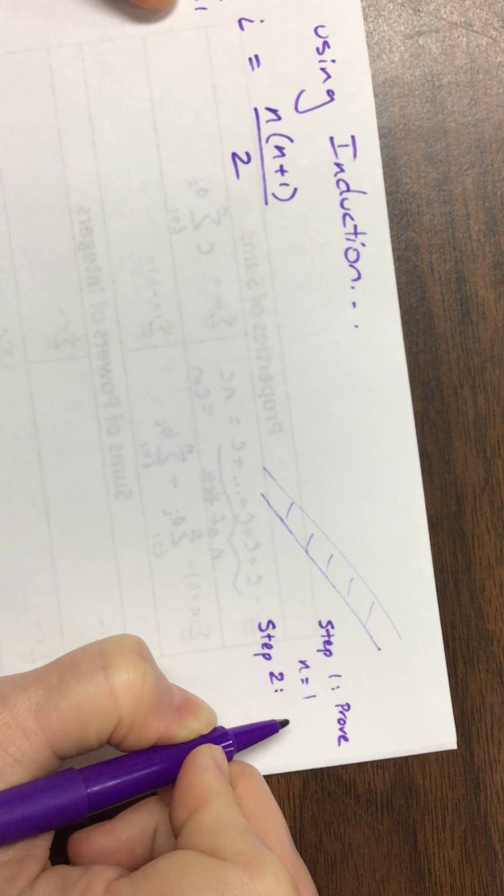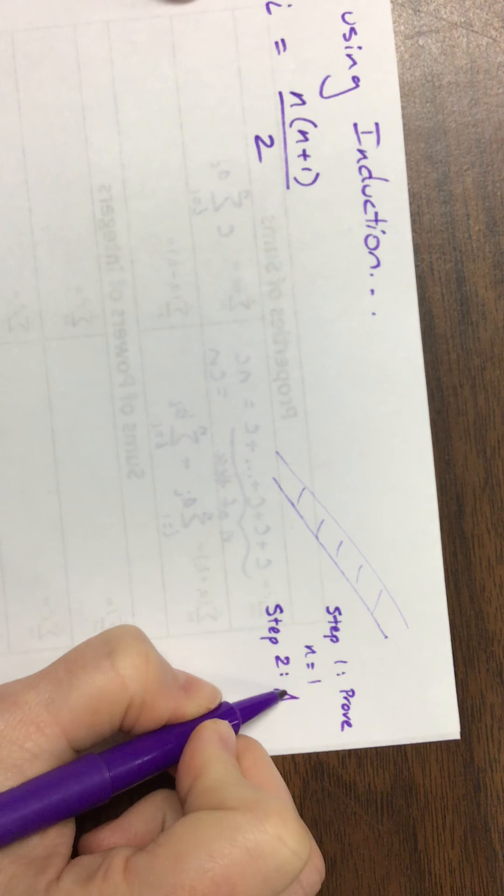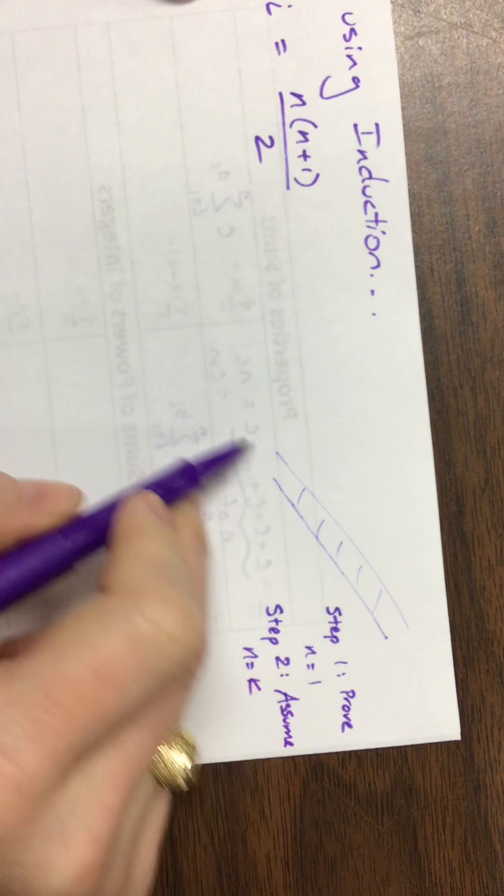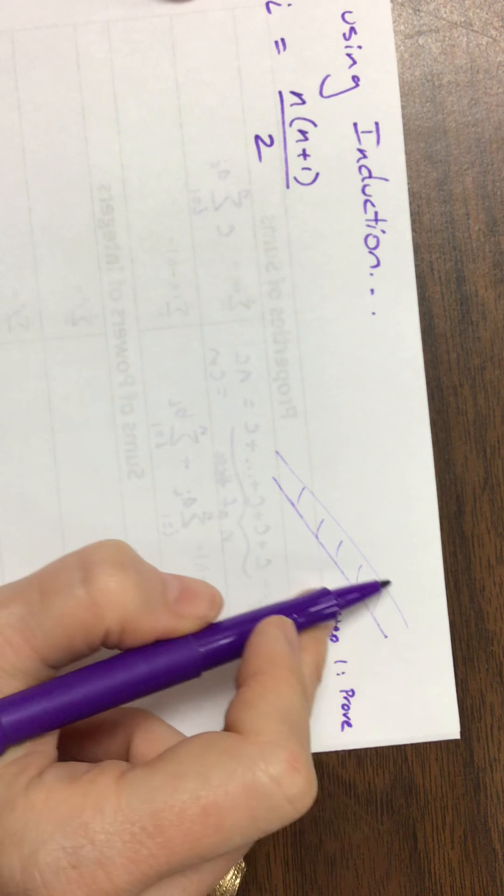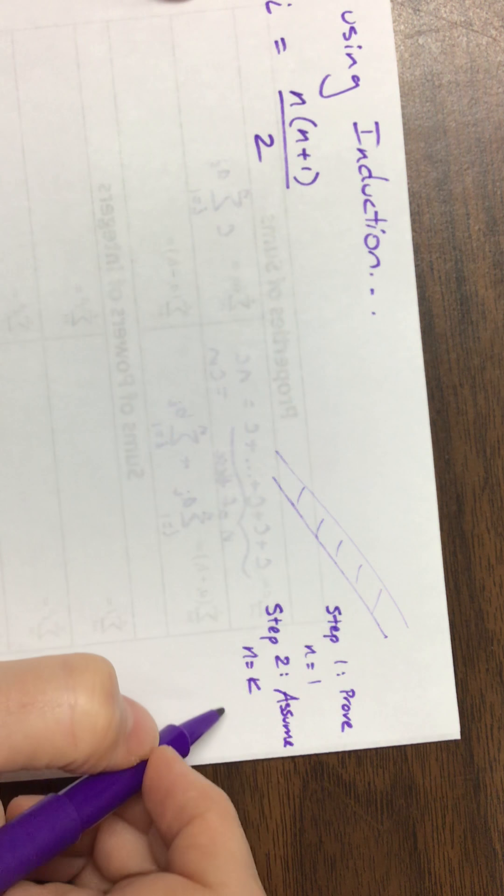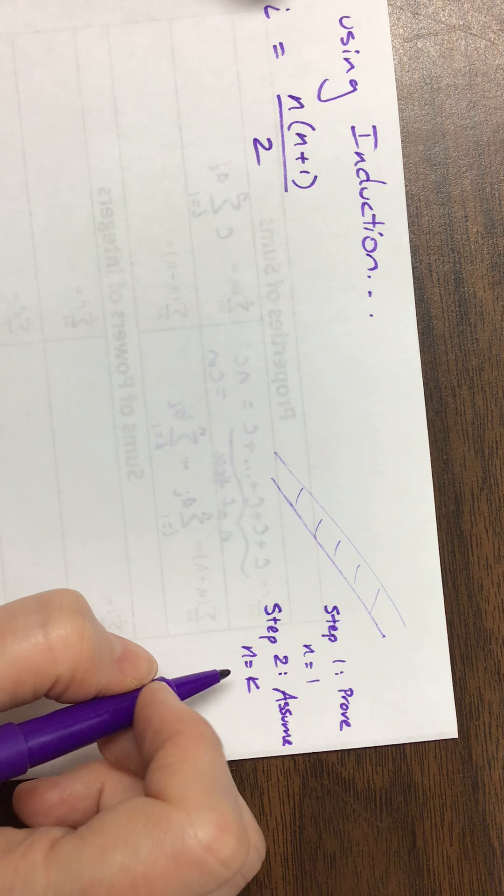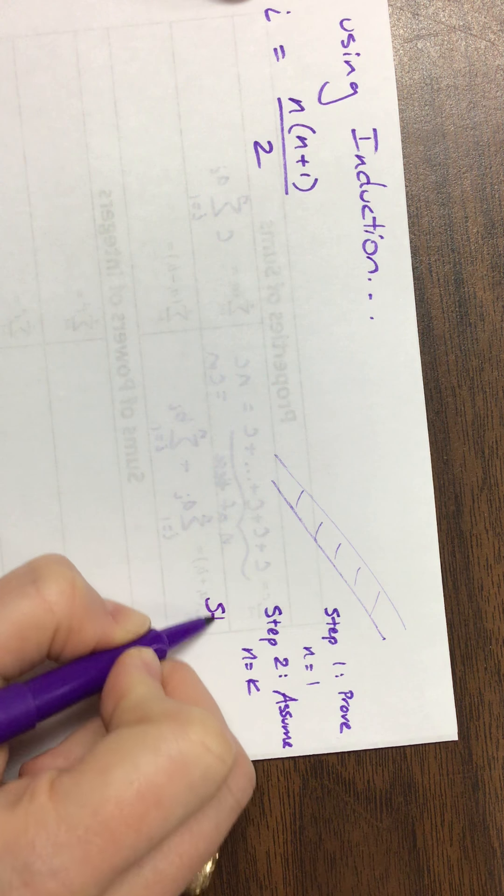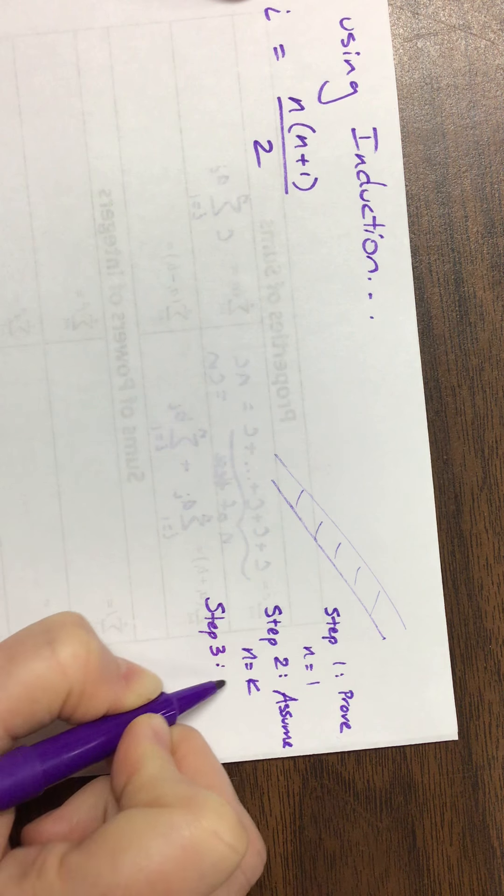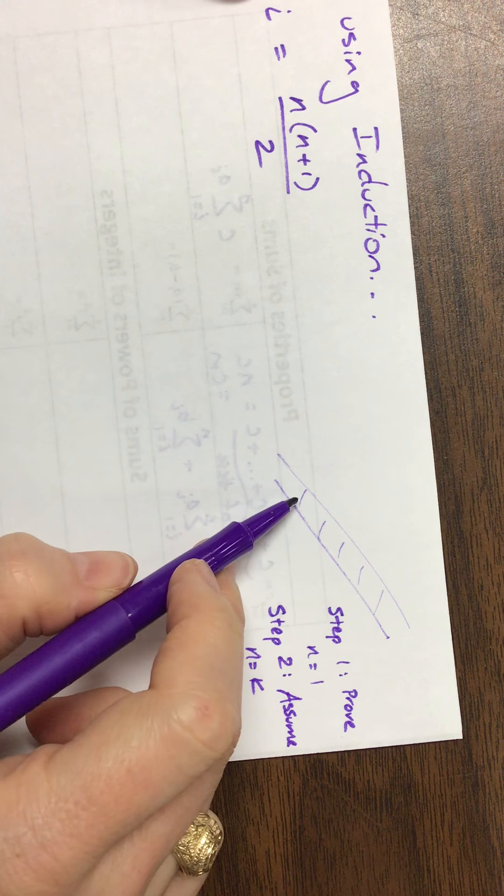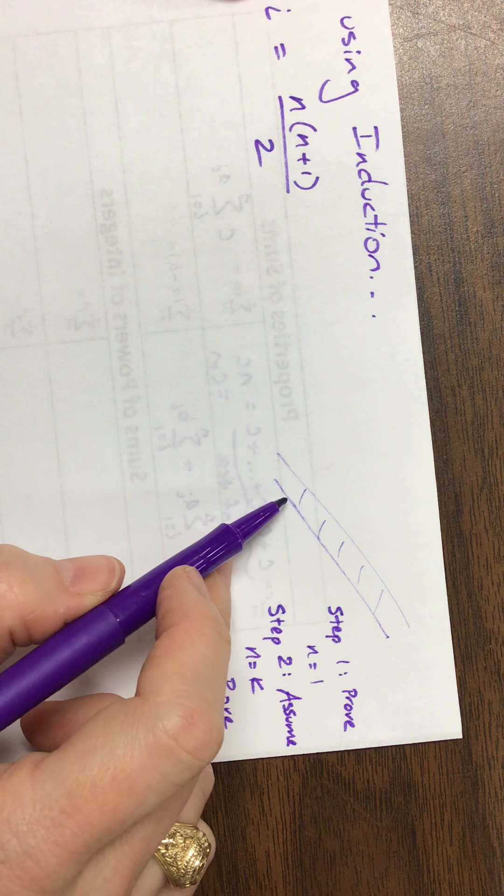Step two is to say, is to assume that n equals k. So now we're going to assume that we're somewhere on this ladder, we're going to assume that we're at step k. k is our favorite ladder. So we're going to assume that we're there at step k.